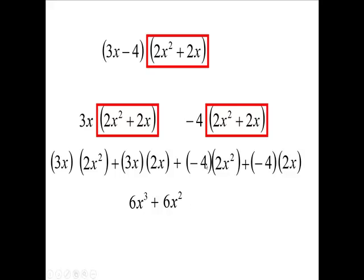Then I have negative 4 times 2 is negative 8x squared. I'm going to line it up underneath this one. So these are like terms, aren't they? And then I have negative 4 times 2x is a negative 8x.